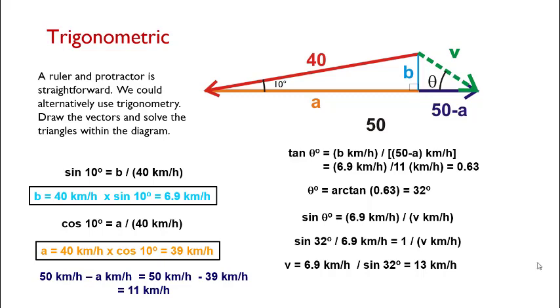One last thought before we wrap up. We'll notice in the trig version of the problem, we ended up with 13 kilometers per hour, but in the ruler and protractor method, we ended up with 12 kilometers per hour.